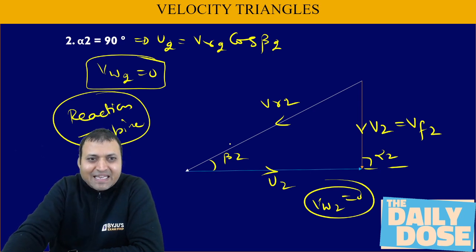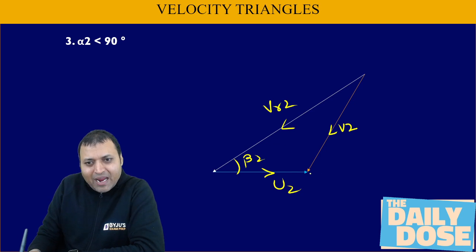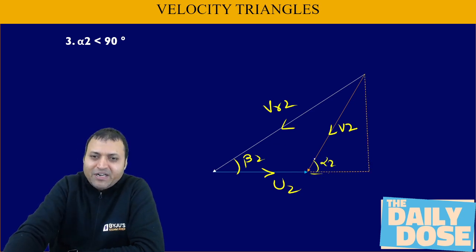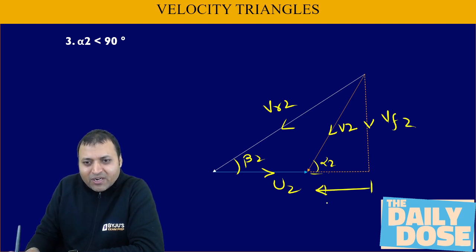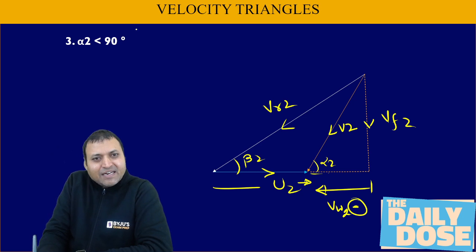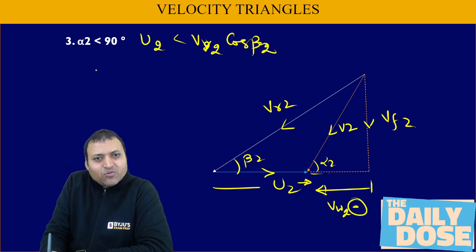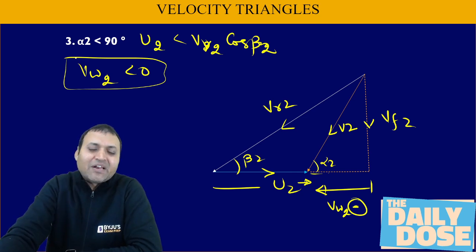If alpha 2 is less than 90°, v2 tilts such that vr2 and u2 form the triangle, with beta 2 at the blade and alpha 2 as the acute angle. Resolving v2 gives vf2 vertically, but now vw2 is negative because it points in the direction opposite to blade motion. So for alpha 2 less than 90°, u2 is less than vr2·cos(beta 2), or vw2 is negative. This is how three types of inlet and exit velocity triangles can be drawn.